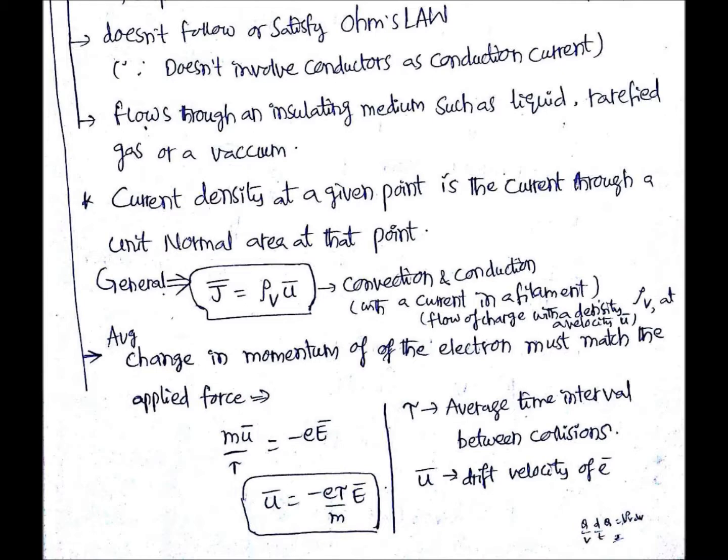A general statement: current density at a given point is the current through a unit normal area at that point. The general current density is J = ρv·u, which represents the flow of charge with a volume charge density ρv at a velocity u. You can find J using the formula ρv times u.